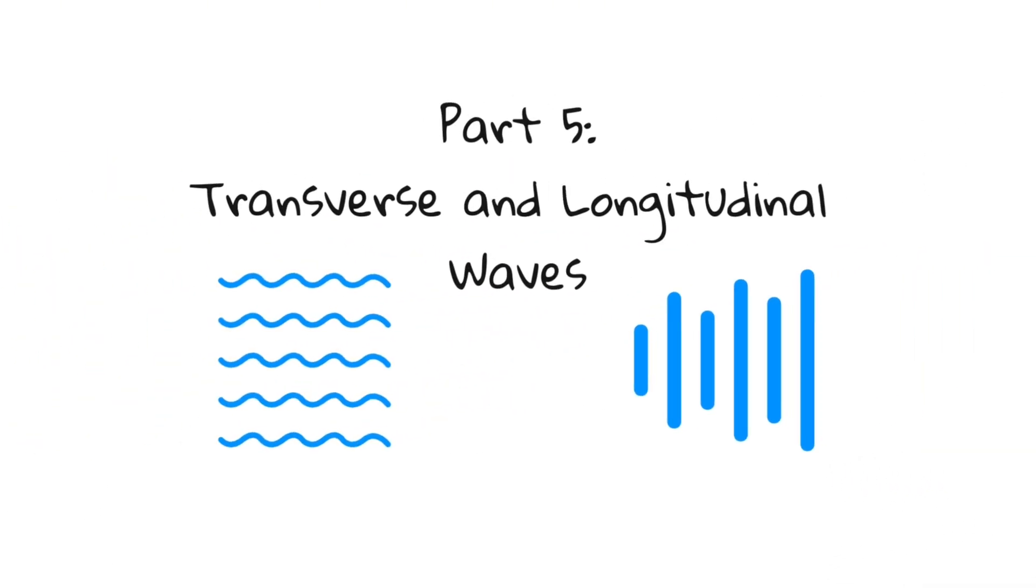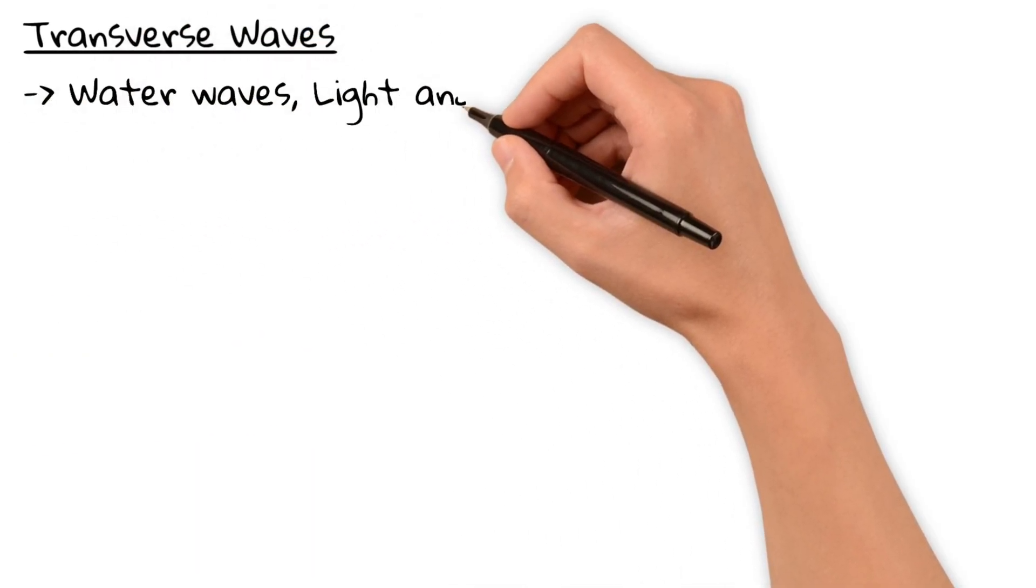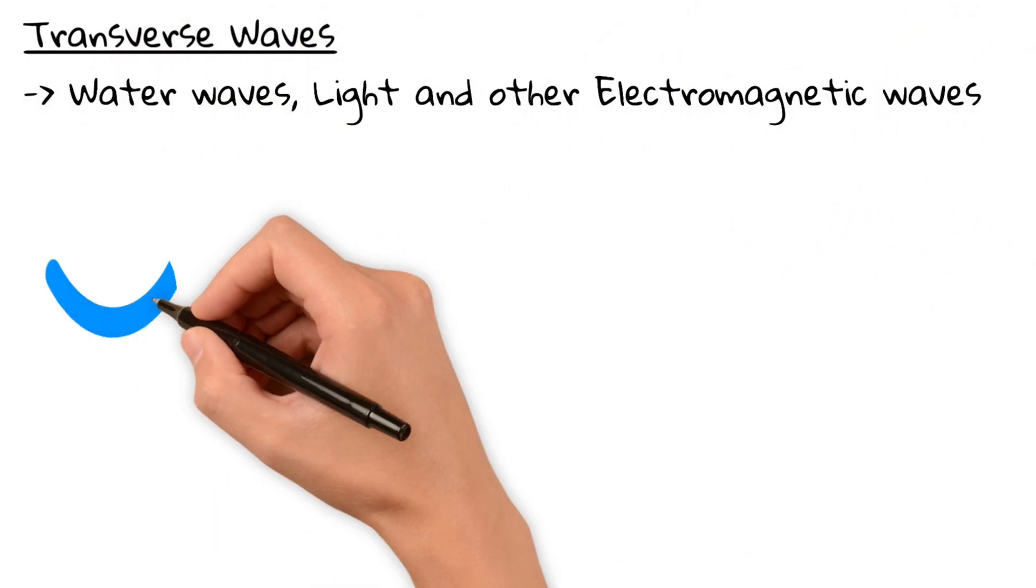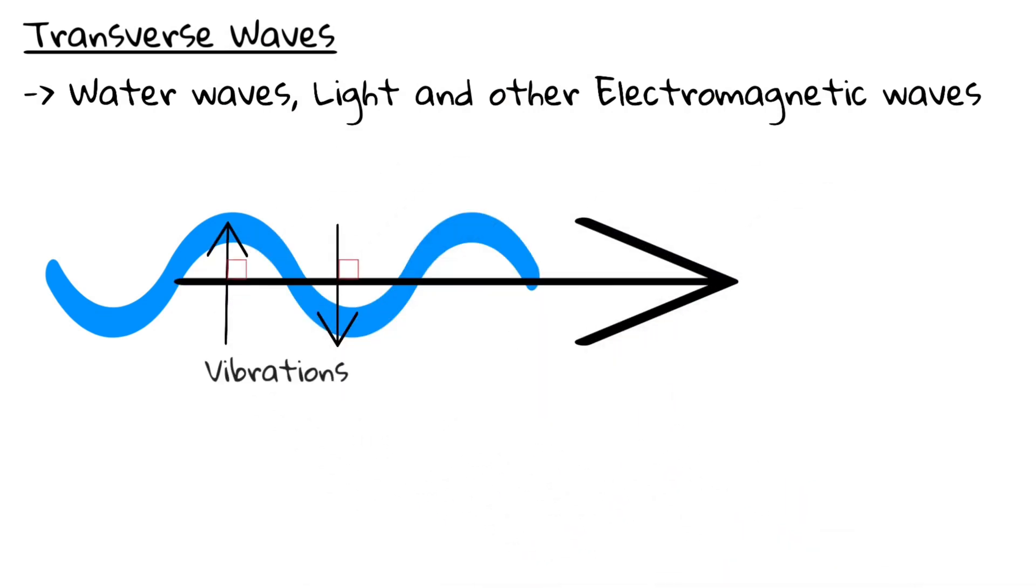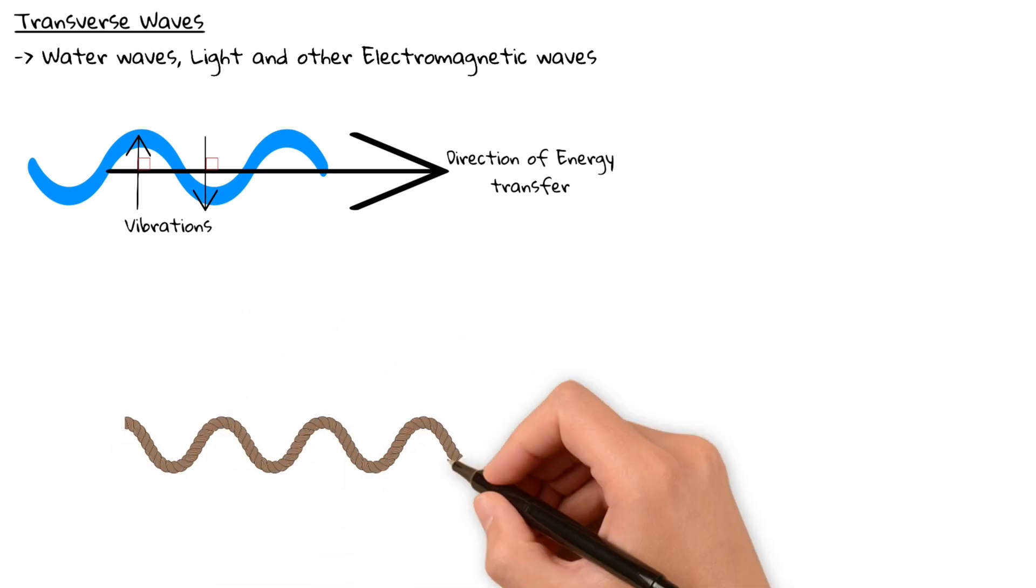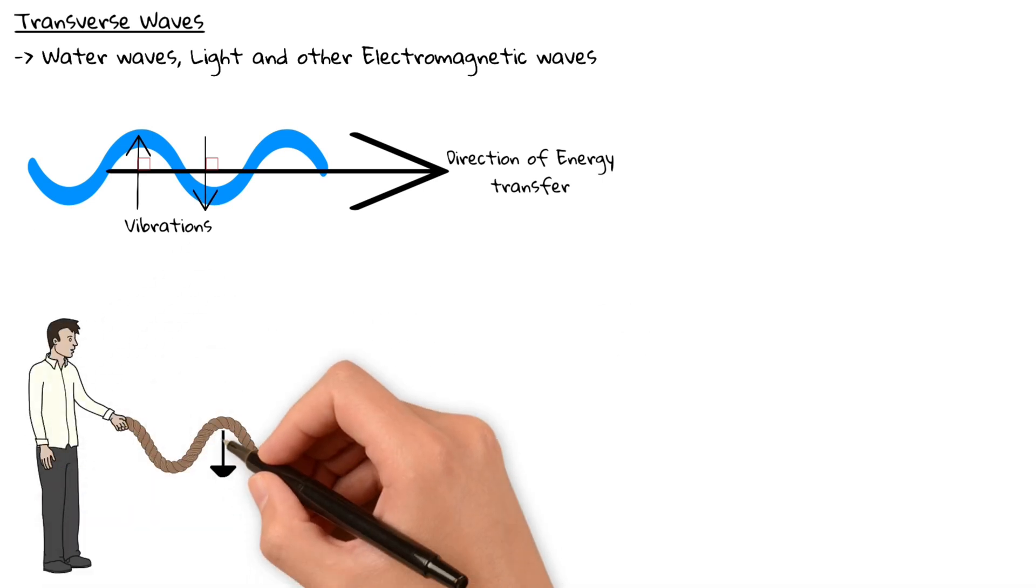Waves like water waves, light waves and electromagnetic waves are transverse. That means the vibrations are perpendicular to the direction the energy is moving. Imagine a rope being flicked. The rope moves up and down, but the wave travels forwards.